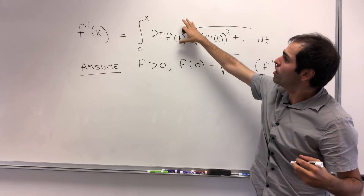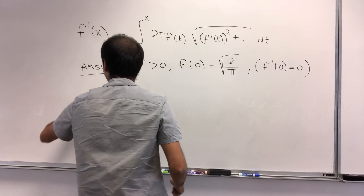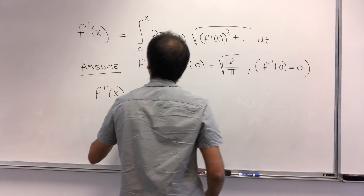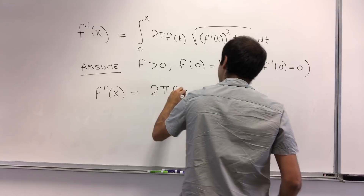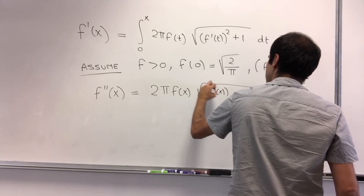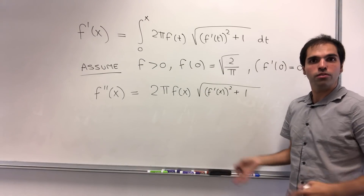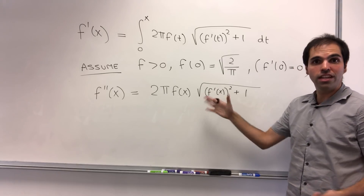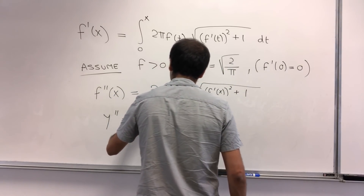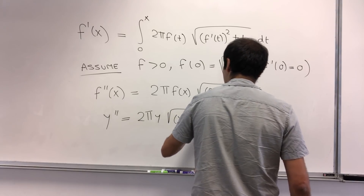In particular, notice we can now just differentiate with respect to x. Using the FTC — the fundamental theorem of calculus — we get f double prime of x equals 2π f(x) times √(f'(x)² + 1). It gets very exhausting to write f all the time, so let's just write y instead. What we need to solve is y'' = 2πy √(y'² + 1).